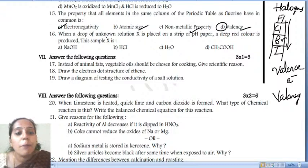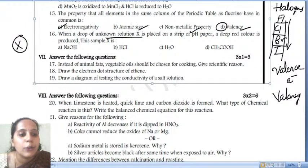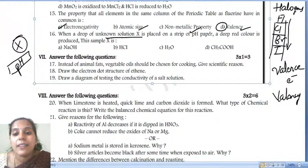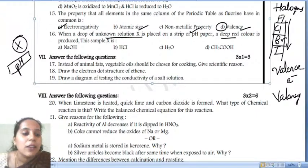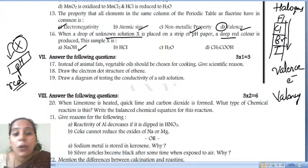Let's go for the next question. When we drop an unknown solution X - we don't know what it is, unknown solution X - onto a strip of pH paper, the resultant is a deep red color. Deep red color appears when X solution is dropped on pH paper. What is sample X?